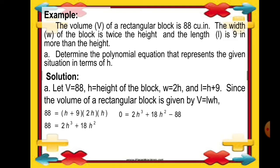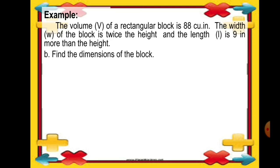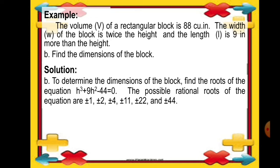Dividing both sides by the greatest common factor of 2, we get 0 equals h cubed plus 9h squared minus 44. The volume of the rectangular block is represented by h cubed plus 9h squared minus 44 equals 0. To find the dimensions, we find the roots. The possible rational roots are plus or minus 1, plus or minus 2, plus or minus 4, plus or minus 11, plus or minus 22, and plus or minus 44.